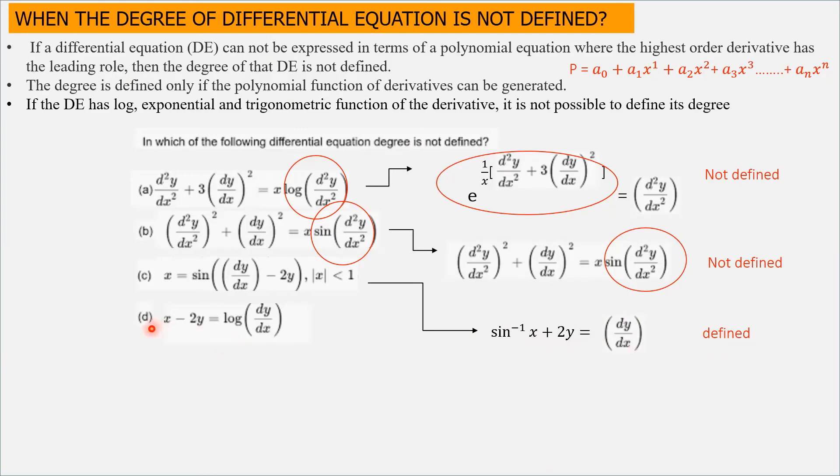Next, option D, which is x minus 2y equals log of dy over dx. This equation can be written as exponential of x minus 2y equals dy over dx. Is it polynomial or not? The answer is it is also polynomial in terms of dy over dx.